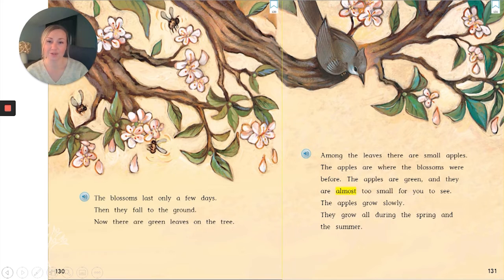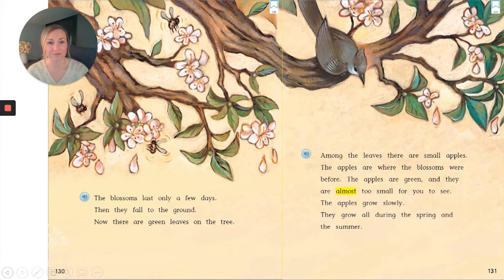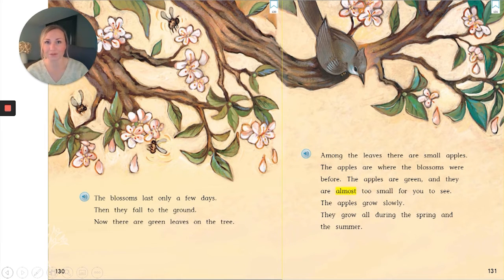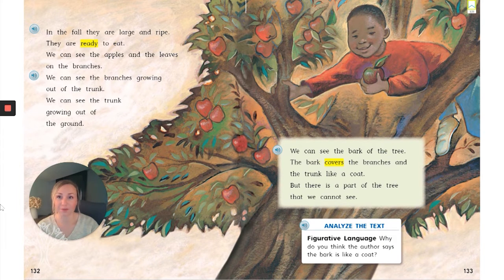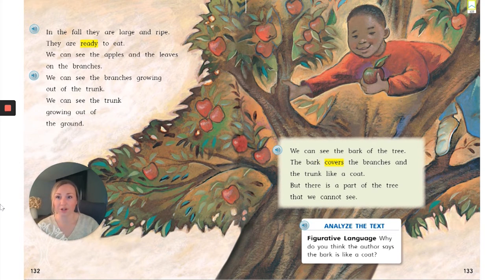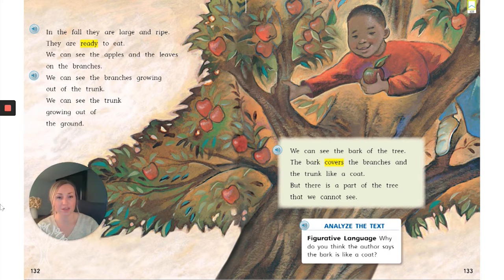The blossoms last only a few days. Then they fall to the ground. Now there are green leaves on the trees. Among the leaves there are small apples. The apples are where the blossoms were before. The apples are green and they are almost too small for you to see. The apples grow slowly. They grow all during the spring and the summer. In the fall they are large and ripe. They are ready to eat. We can see the apples and the leaves on the branches. We can see the branches growing out of the trunk. We can see the trunk growing out of the ground. We can see the bark of the tree. The bark covers the branches and the trunk like a coat. But there is a part of the tree that we cannot see.